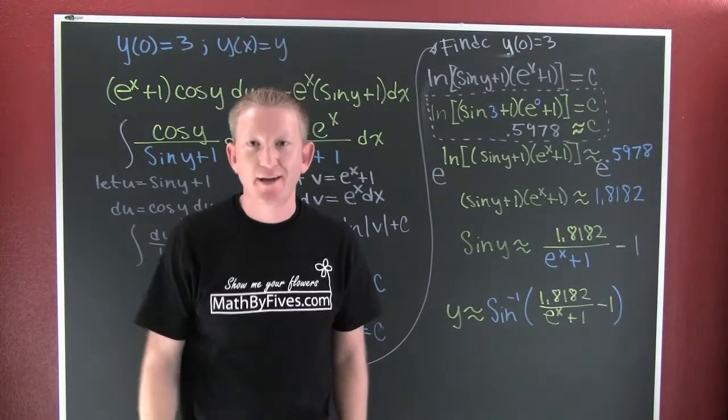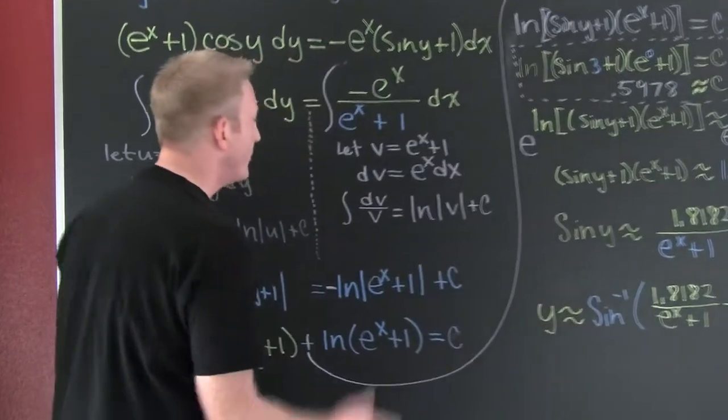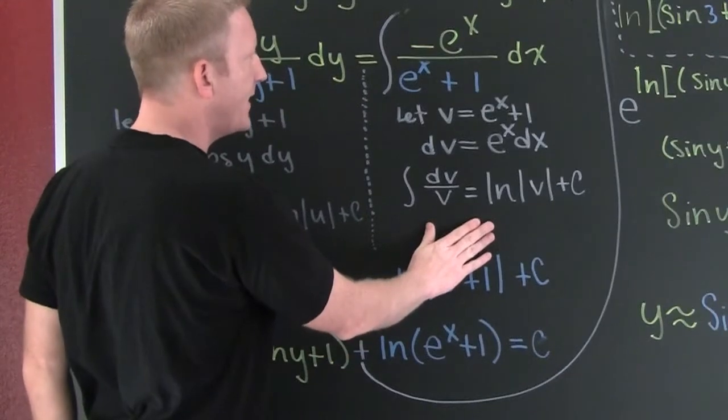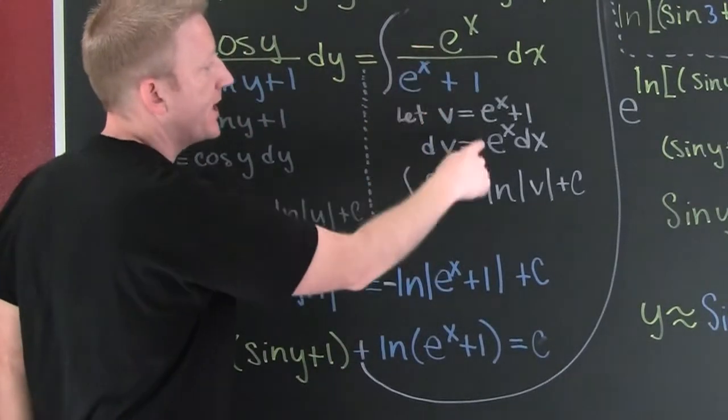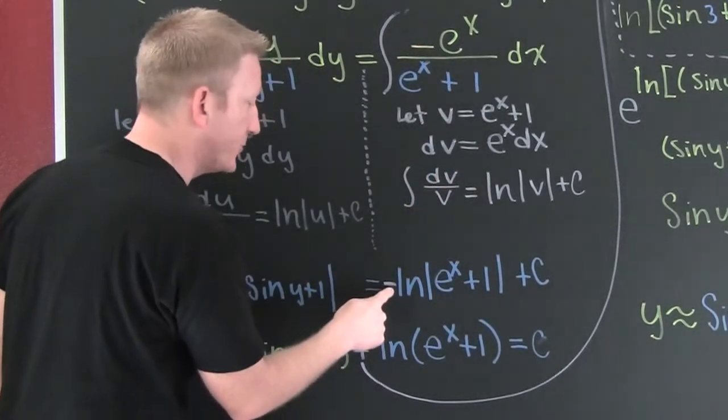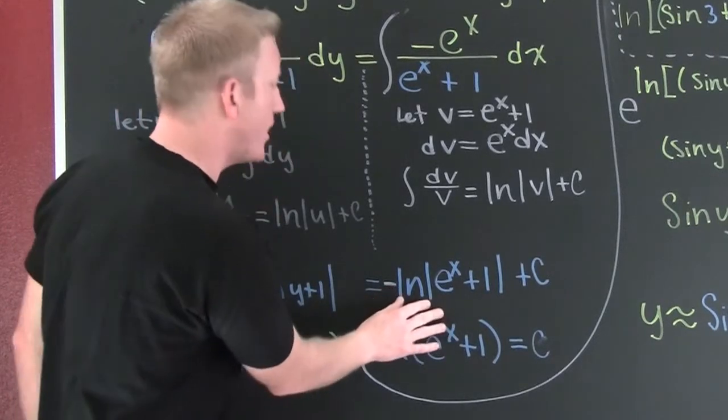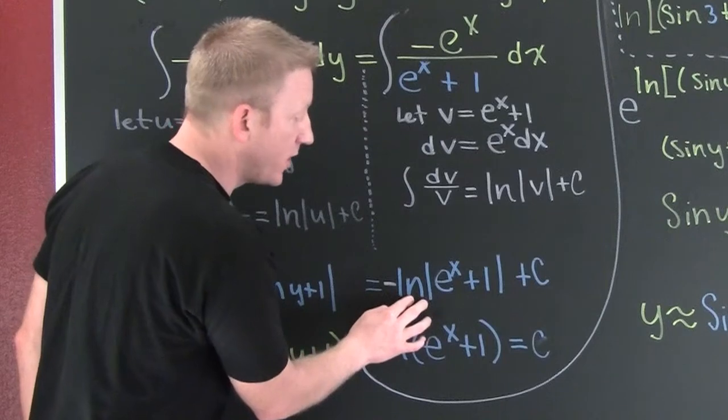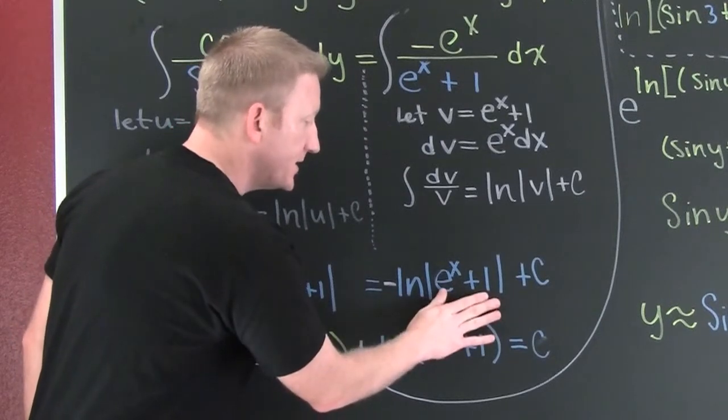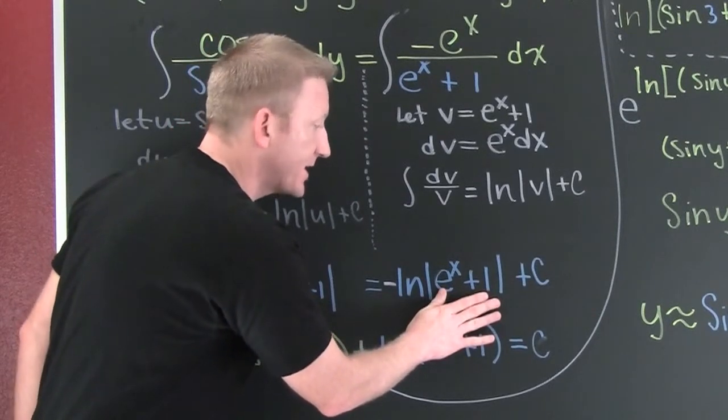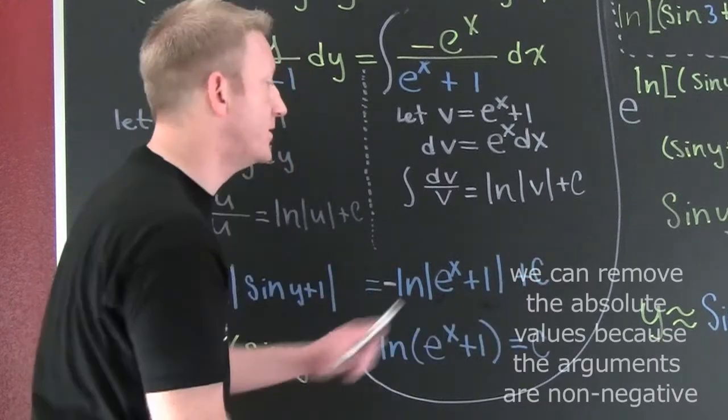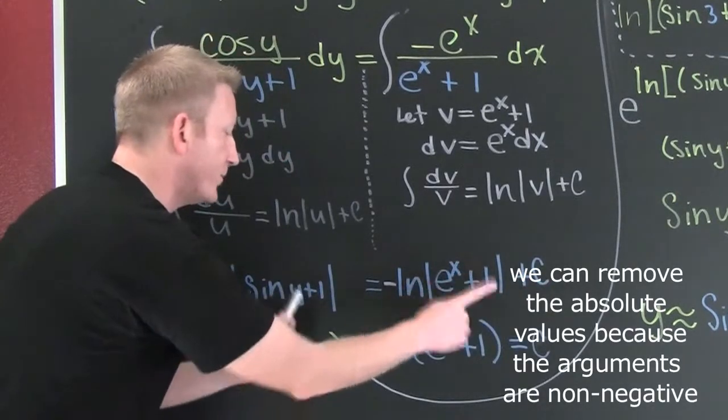Okay, we're back. So where were we? We were integrating this guy. Because I had that minus sign on the outside, I needed to put that out there. So this guy integrates to minus the natural log of the absolute value of e to the x plus 1 plus that constant. I'm only putting one constant for both sides.